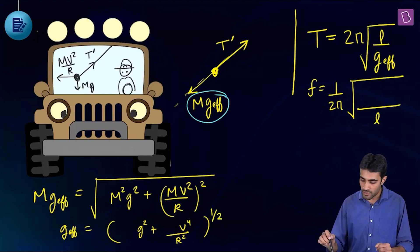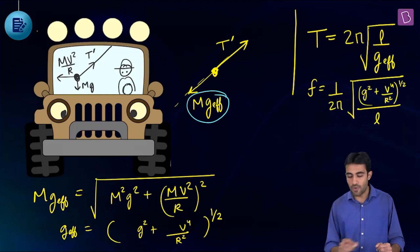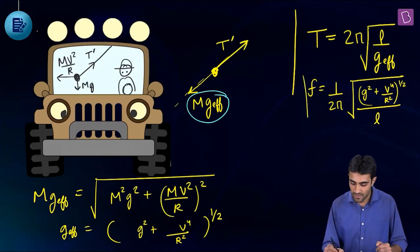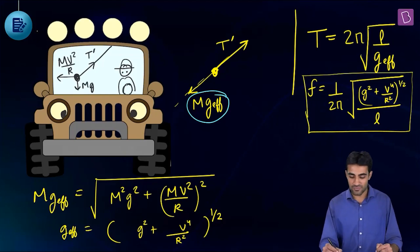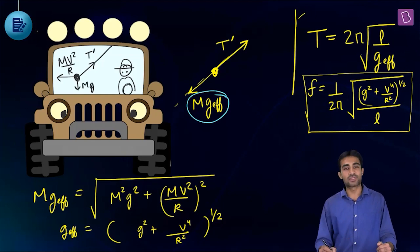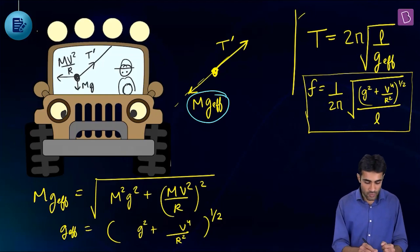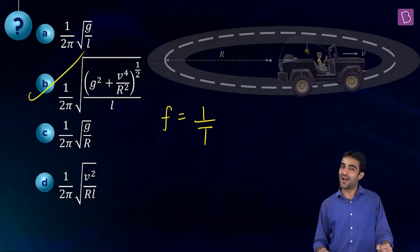Substituting G_effective into the frequency formula, the frequency of oscillation is (1/2π) × (G² + V⁴/R²)^(1/4). Using this formula, option B is the correct answer.